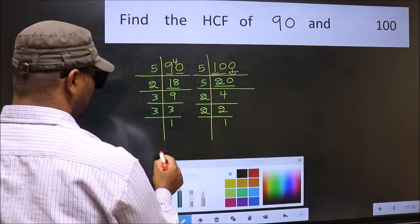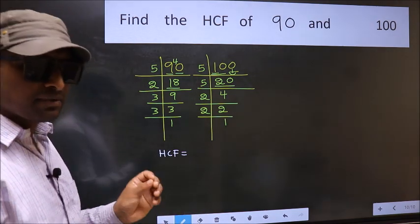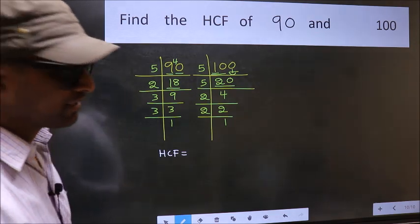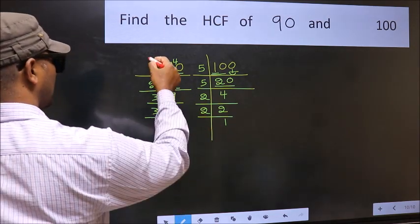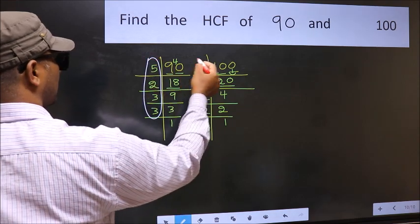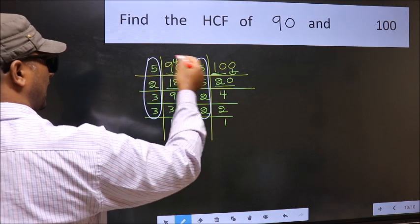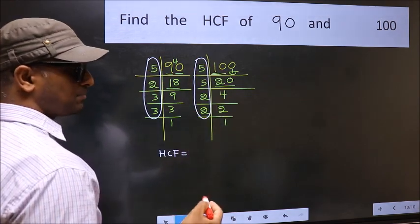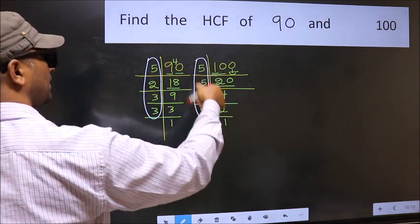Therefore, our HCF is the product of the numbers which should be present in these two places. That is here and also here. Here and here. So now let us find the numbers which should be present here and here.